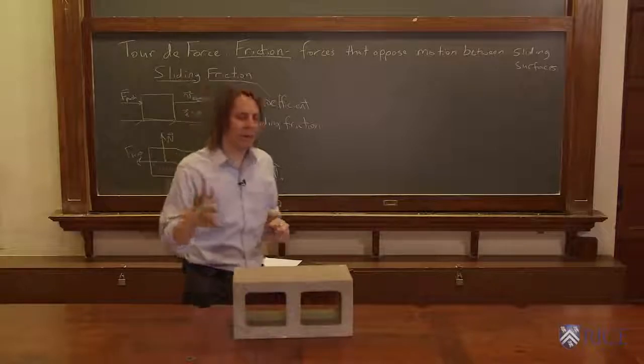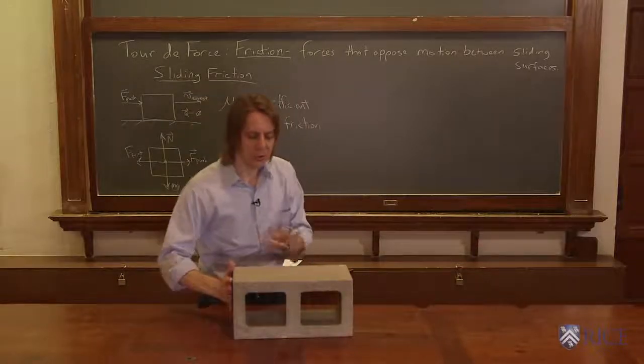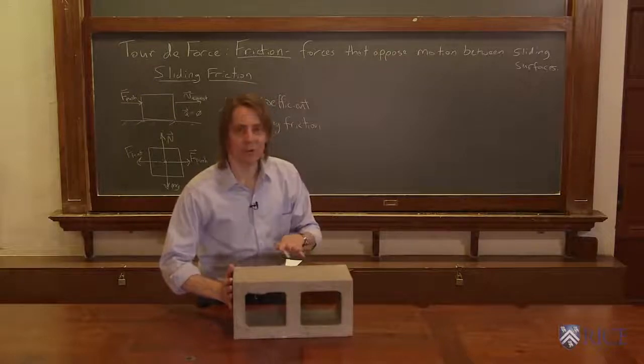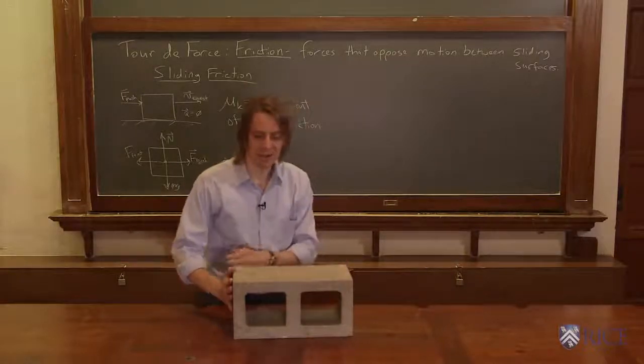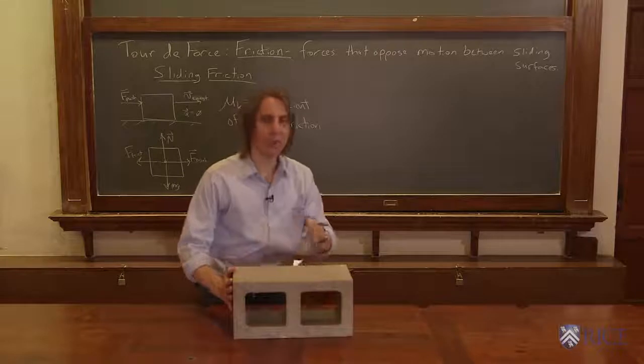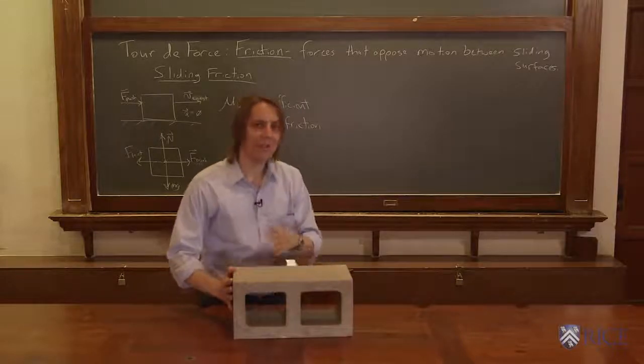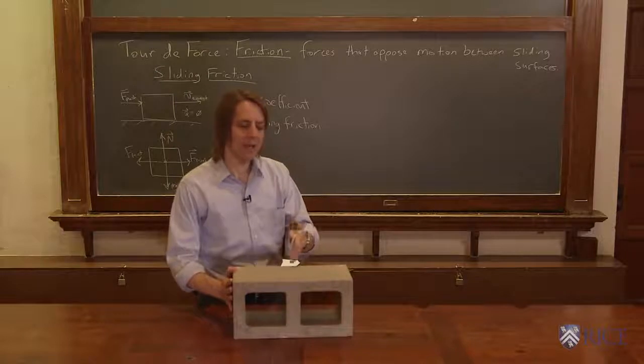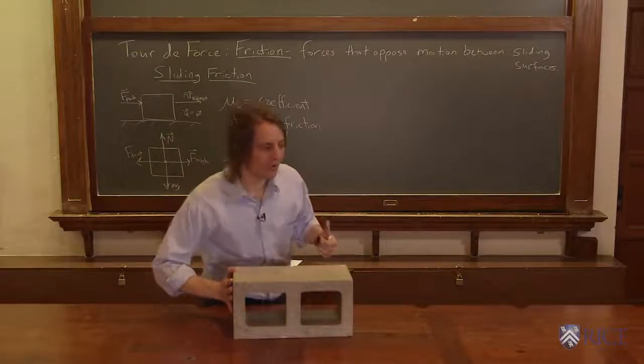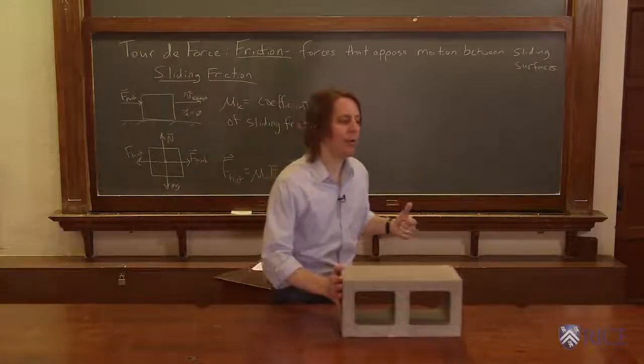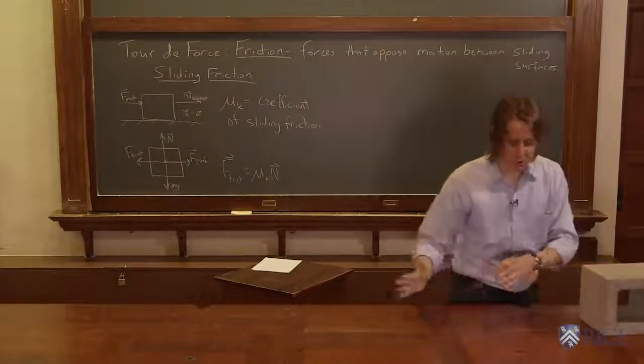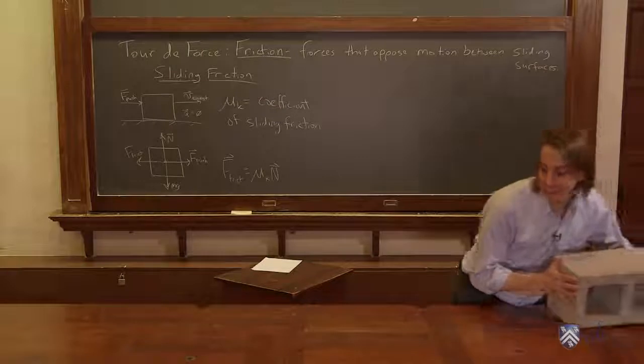To push this at a constant velocity, I briefly have to overcome the friction force to get it going. Then it accelerates from zero velocity to some velocity. But then once I'm at that velocity I want, then I pull my force back. And at that point, I'm just balancing the friction force. So here I'm overcoming friction, and I sped it up, and now I'm going at my constant velocity. It's hard to do it exactly perfect because it's just really heavy.